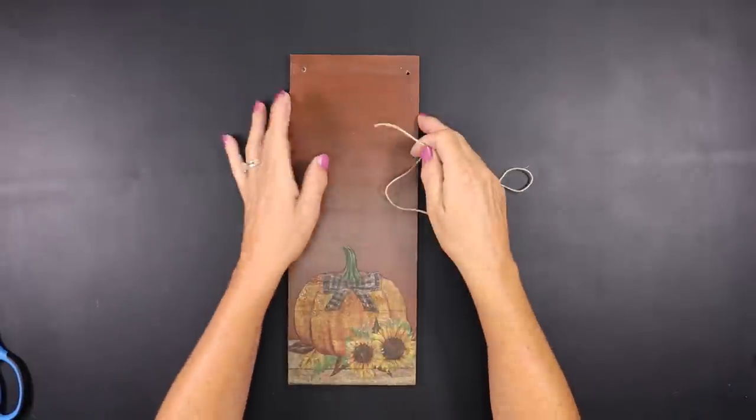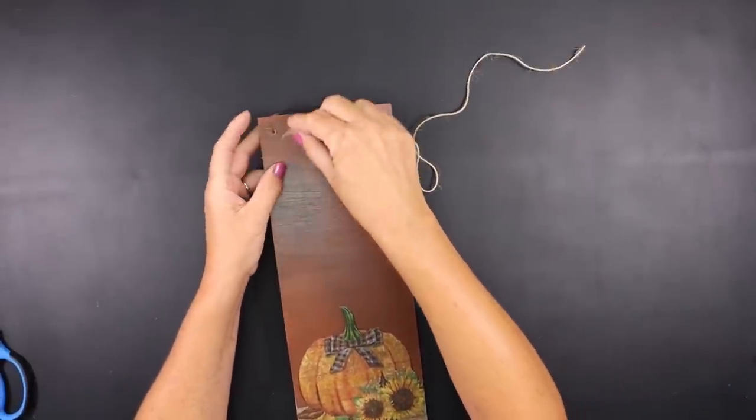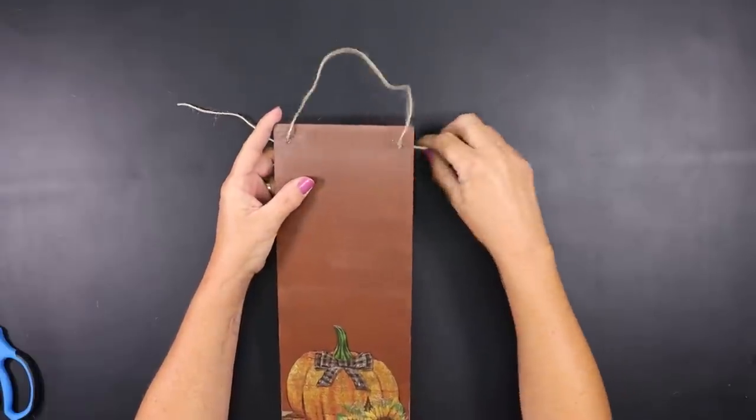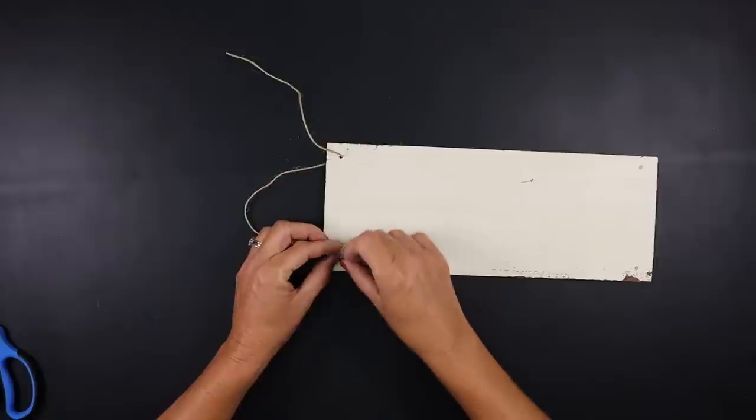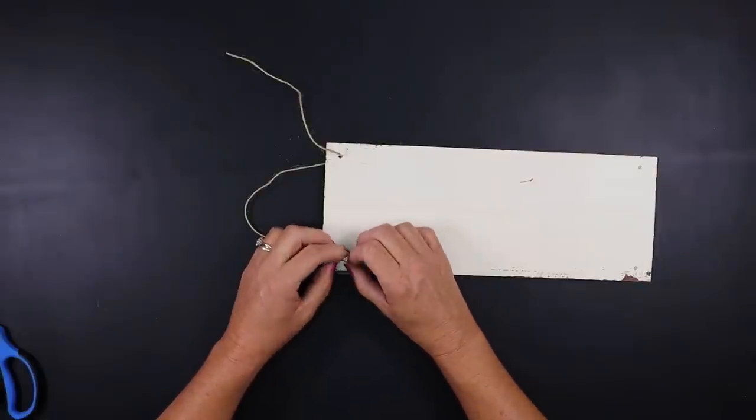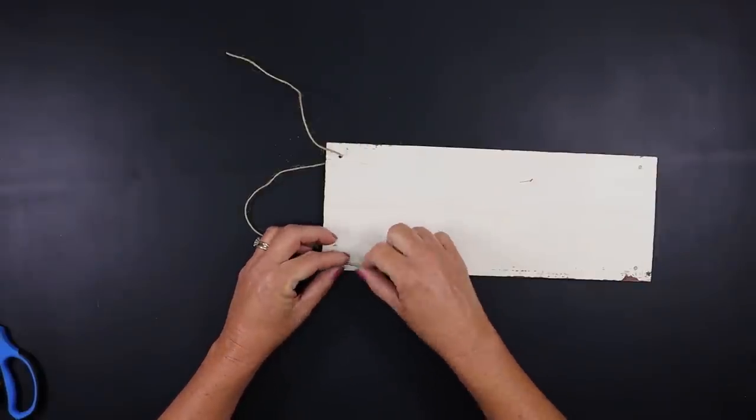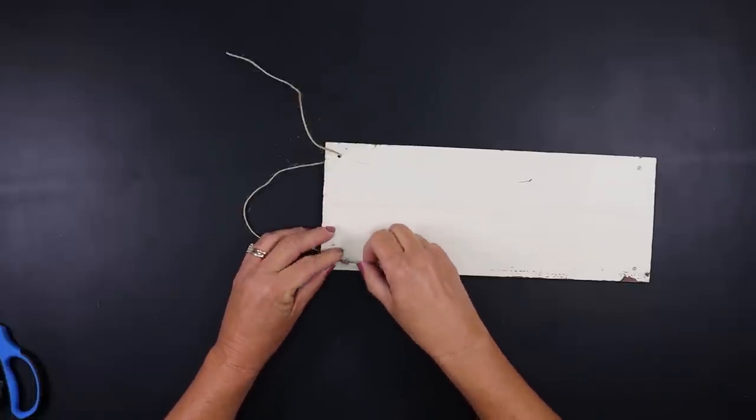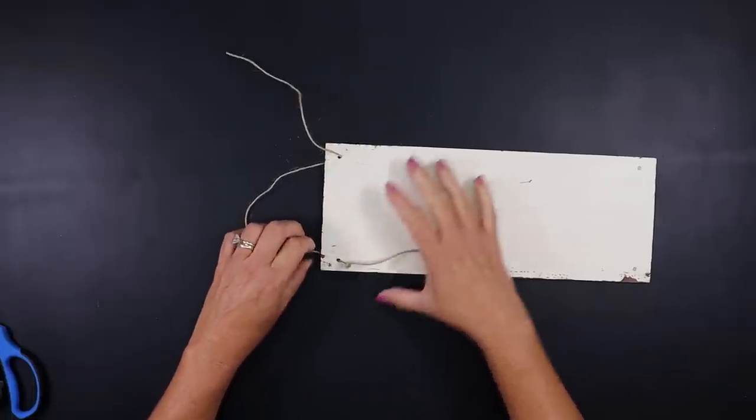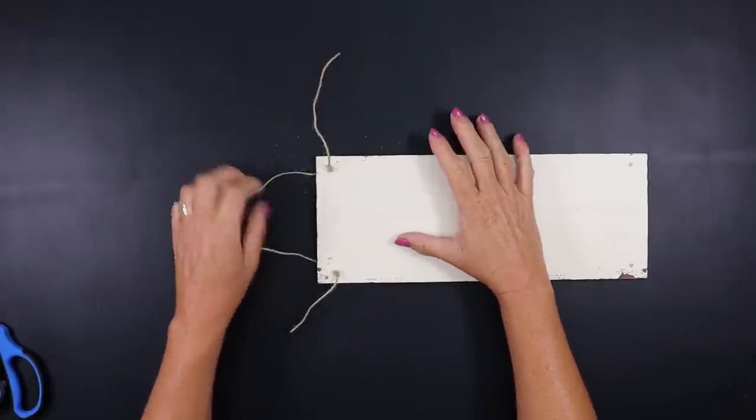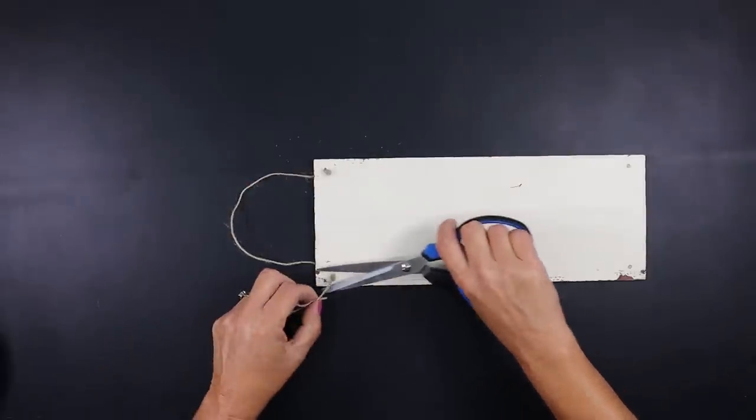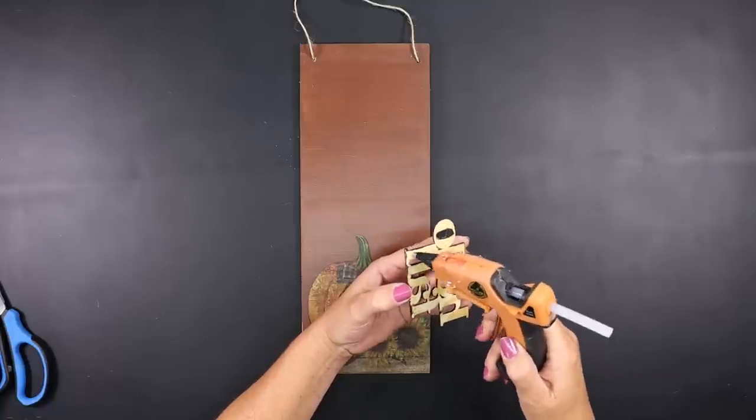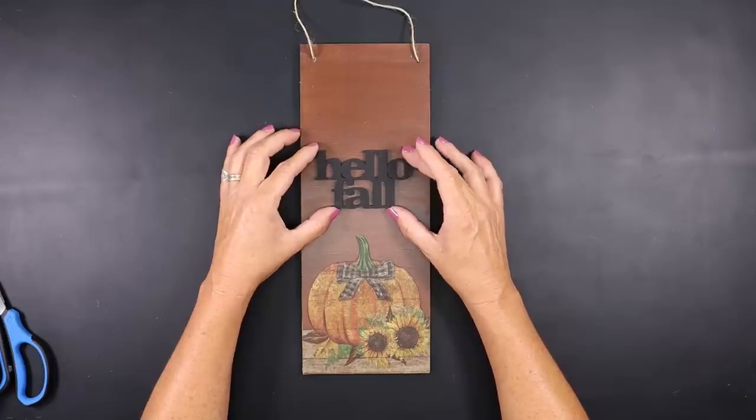Using a piece of twine to create a hanger I'm going to feed one end through each of those holes at the top and then I'll double knot each end on the back so that the knot will stay to the back side of the sign. You could add a little bit of hot glue if you like to make sure that the knot stays in place and does not feed back through that hole. Cut your excess off and then we're going to attach our Hello Fall that we painted directly in the center right above our napkin that we adhered.